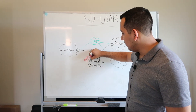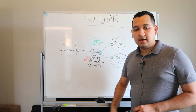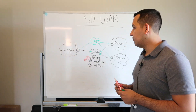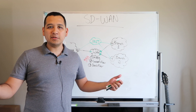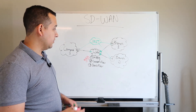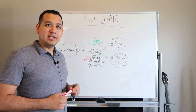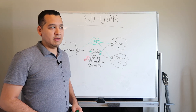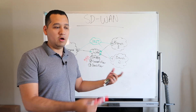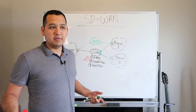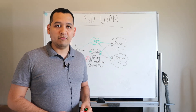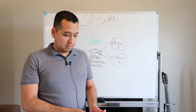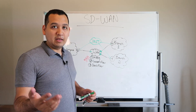The way some organizations have decided to combat this cost is through using the internet, which is less expensive. However, the internet is the internet — it's lossy. We lose connectivity to it all the time. If you don't have 4G LTE along with direct internet access, you're probably going to lose connectivity. You're not going to have quality of service over that because when traffic goes through the internet, you don't know what direction it's going through, so it can become very lossy.